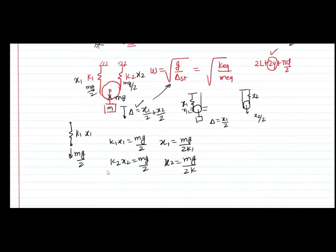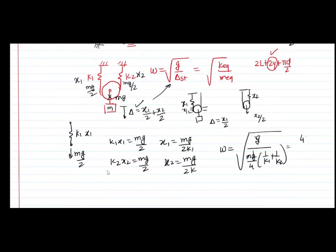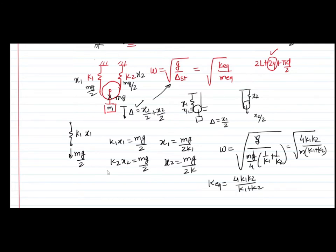So omega equals sqrt(g/delta). Substituting the values, I get a factor of mg/4 multiplied by (1/k1 + 1/k2). Rearranging and cancelling g, I obtain omega = sqrt(4*k1*k2 / ((k1+k2)*m)). This means the k_equivalent is equal to 4*k1*k2 / (k1+k2).